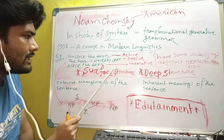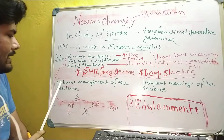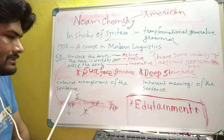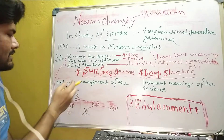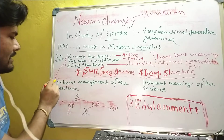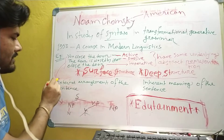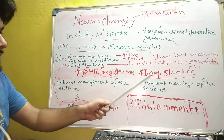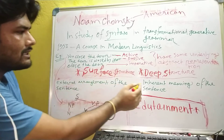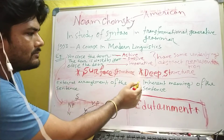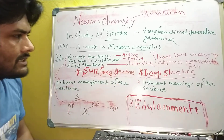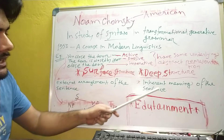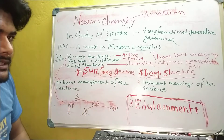Surface structure — what is it? It is the external arrangement of the sentence. Surface structure is the external arrangement of a sentence. And deep structure is the inherent meaning of the sentence. Deep structure gives the inherent meaning of the sentence.